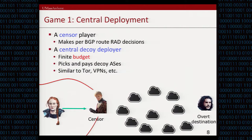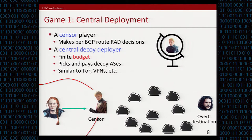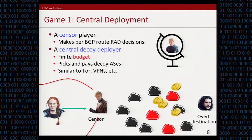The first deployment we study is what we call the central deployment. In this case, there is a central decision maker for the decoy routing system — some organization with a finite budget for deploying a decoy routing system. Depending on which autonomous system is a better fit for running this decoy routing system, this entity will spend the budget to pay some autonomous systems on the internet to deploy the decoy routing system. He will pay a selected number of autonomous systems and these will become decoy routers.